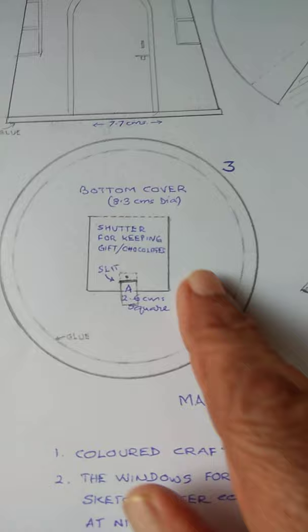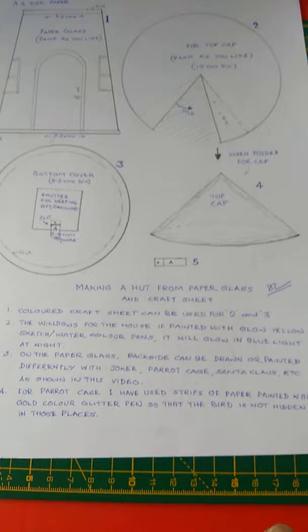And the bottom portion with the shutter, one inch square I have made, this one. And making a hut. This is making a hut from paper glass.